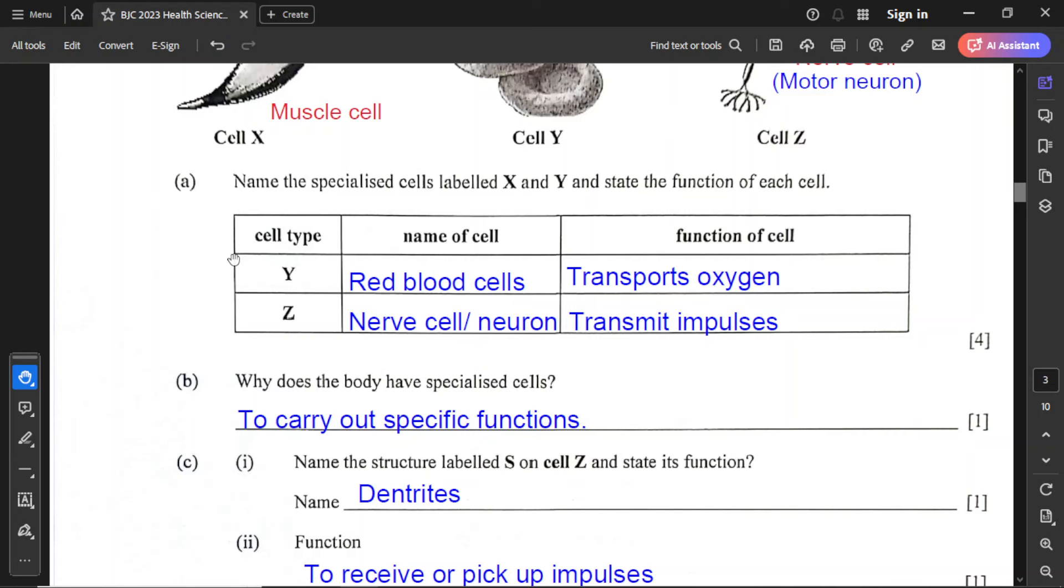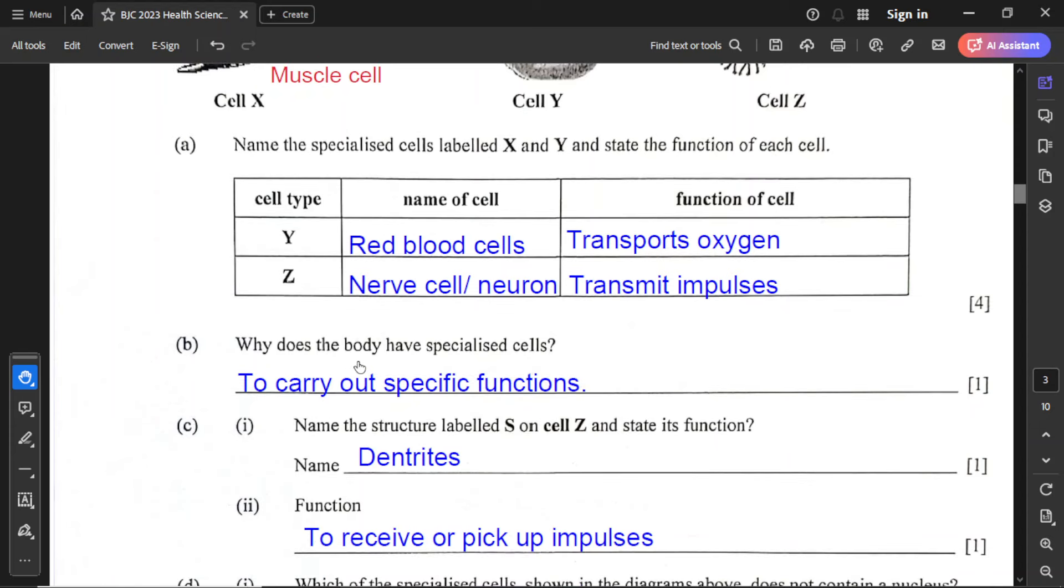For part A, name the specialized cells labeled X and Y. Y is the red blood cells, Z is the nerve cell or neuron. The function of the red blood cell is to transport oxygen. The function of a nerve cell is to transmit impulses. For part B, why does the body have specialized cells? The purpose is to carry out specific functions. For example, cells in your muscles help with movement, cells in your endocrine glands secrete hormones, cells in your ear help with hearing, and cells in your tongue help with taste. Different cells have different functions.